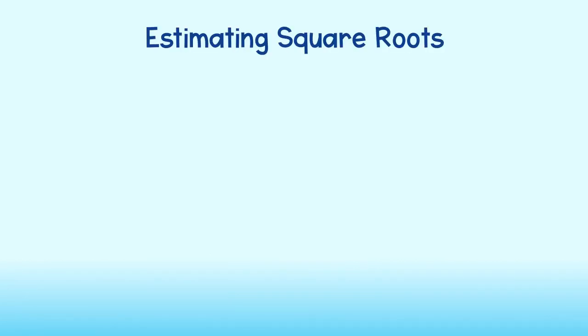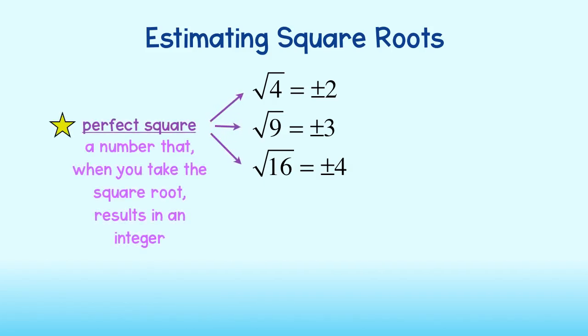Before we help Ben solve his problem, let's take a look at how to estimate a square root. You may recall the square root of some numbers such as 4, 9, 16, and so on. These are called perfect squares because the square root of these numbers are integers.